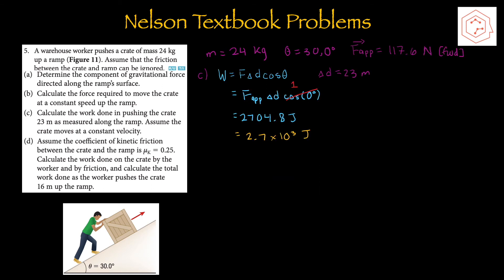Part C: calculate the work done pushing the crate 23 meters along the ramp at constant velocity. Using the applied force of 117.6 newtons from part B, and noting theta equals zero degrees since force and displacement are in the same direction, plugging into the work formula gives 2.7 × 10³ joules.